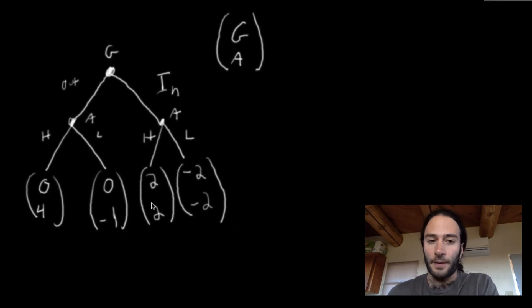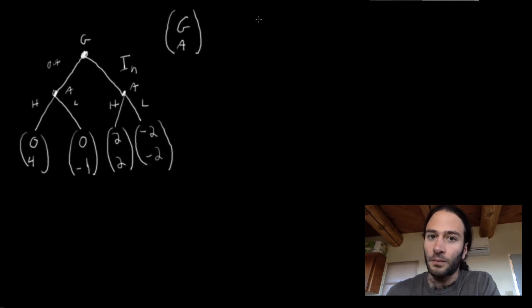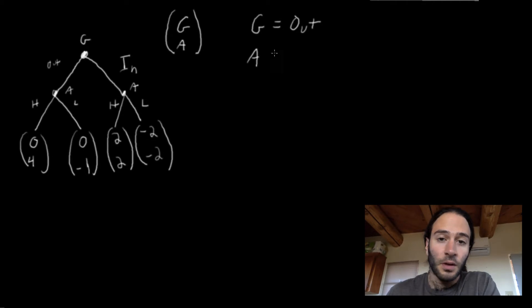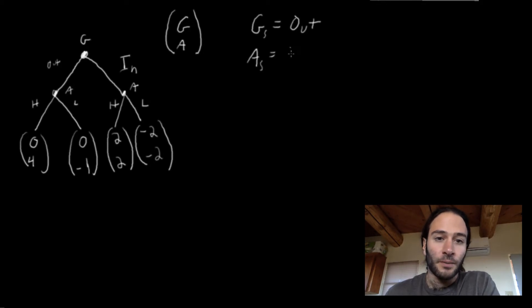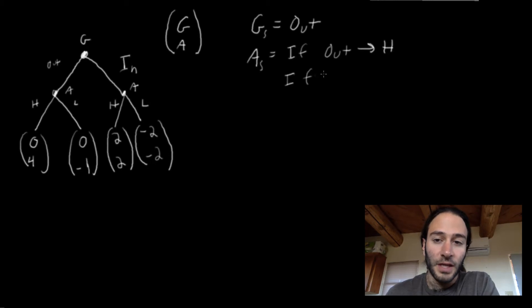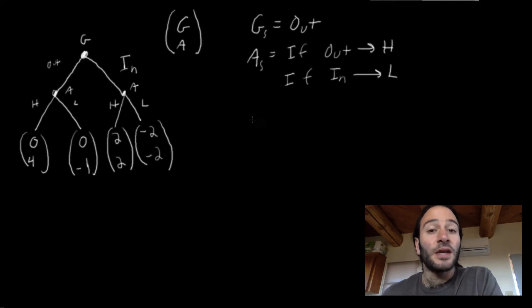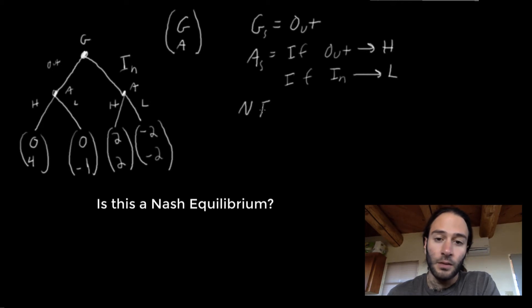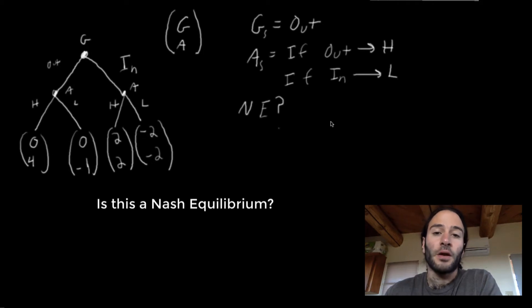Let's look at a certain strategy profile. Google plays out, and Apple's strategy — I'll put GS for strategies — Apple plays: if out, choose the high price; if Google plays in, choose the low price. What we want to see is whether this is a Nash equilibrium. Remember the definition: no player has an incentive to unilaterally change its strategy.